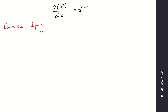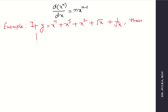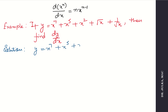Example: if y equals x to the power 7 plus x to the power 5 plus x square plus root x plus 1 upon root x, find dy by dx. Note that root x means x to the power 1 by 2 and 1 by root x means x to the power minus 1 by 2. So we rewrite y as x to the power 7 plus x to the power 5 plus x square plus x to the power 1 by 2 plus x to the power minus 1 by 2.